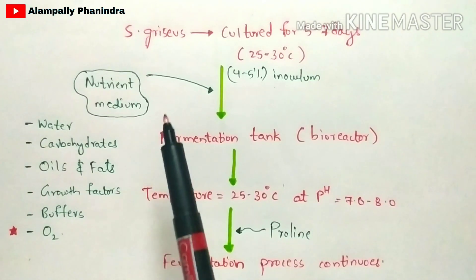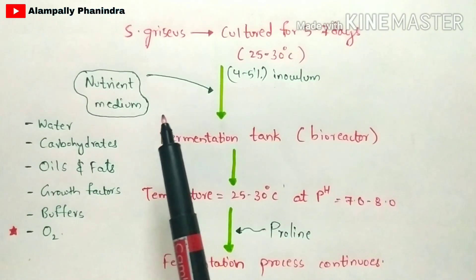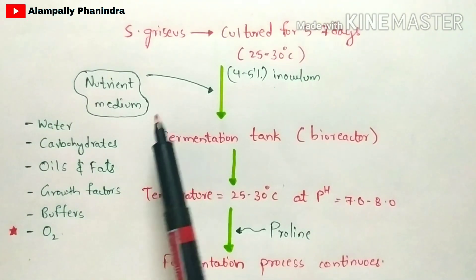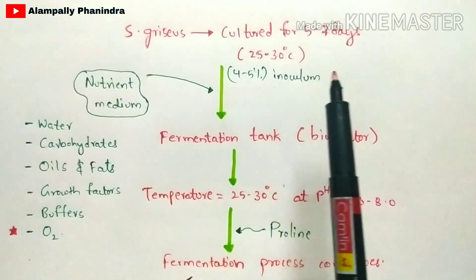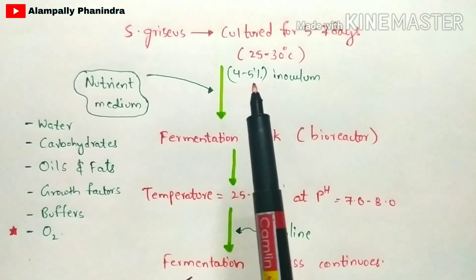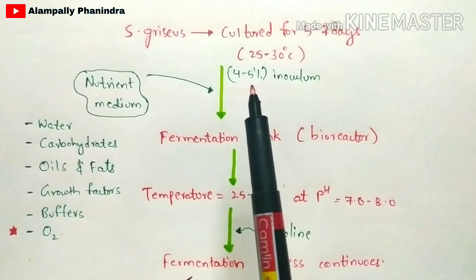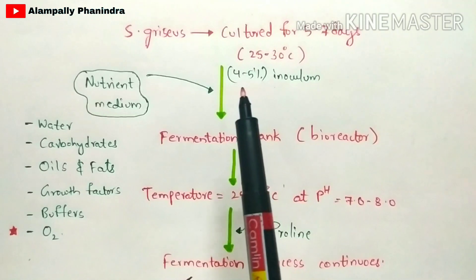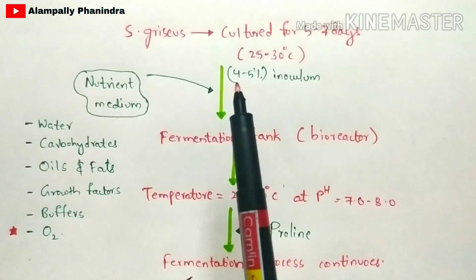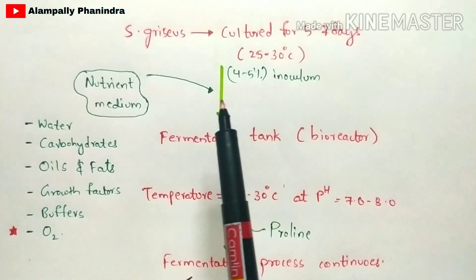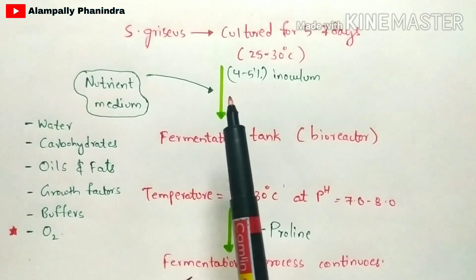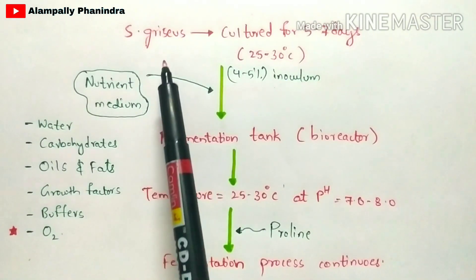The main aim of fermentation is that the primary metabolites will get converted into secondary metabolites by using a nutrient medium. That is the main aim of fermentation, and this is what we will use for the production of streptomycin.